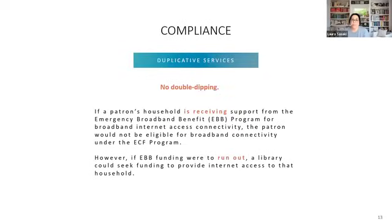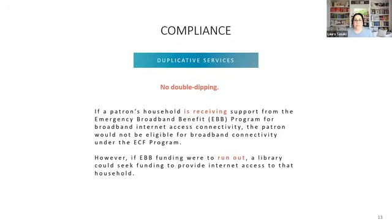No double dipping on duplicative services: if a patron's household is already receiving support from the Emergency Broadband Benefit — the low-cost broadband program — they wouldn't be eligible to also receive broadband connectivity under ECF. However, if that money was running out, the library could seek ECF funding to keep connectivity going if the patron would otherwise lack sufficient access. This also applies to any previous federal or state funding related to the COVID emergency.